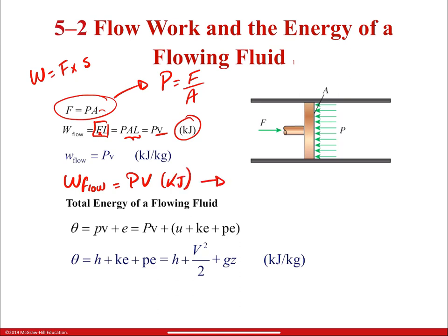The flow work of a flowing fluid equals P·V in kilojoules. Per unit mass, the flow work equals P times specific volume (P·v), in kilojoules per kilogram. This was derived simply by using the equation of work and substituting force with PA to develop the flow work, or the energy of a flowing fluid.